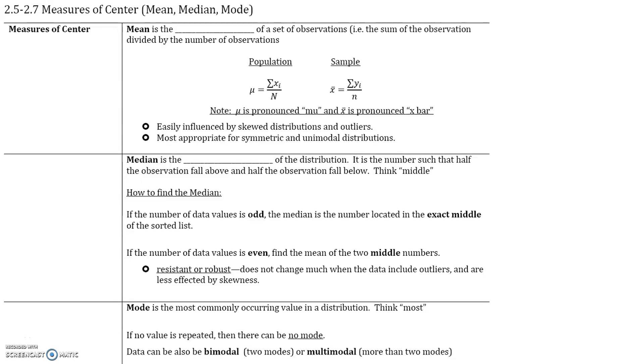Mean is the average of a set of observations. Remember, the average is the sum of the observations divided by the number of observations. There are different notations for the mean of a population and the mean of a sample. The mean of the population is given by mu, which is the sum of all the data values divided by the number of total data values.